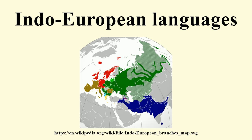Italic, including Latin and its descendants, emerged around 3000 BC, attested from the 7th century BC. Celtic, descended from Proto-Celtic, emerged around 3000 BC; Lepontic inscriptions date as early as the 6th century BC, Celtiberian from the 2nd century BC, Primitive Irish Ogham inscriptions from the 5th century AD, and earliest inscriptions in Old Welsh from the 8th century AD.